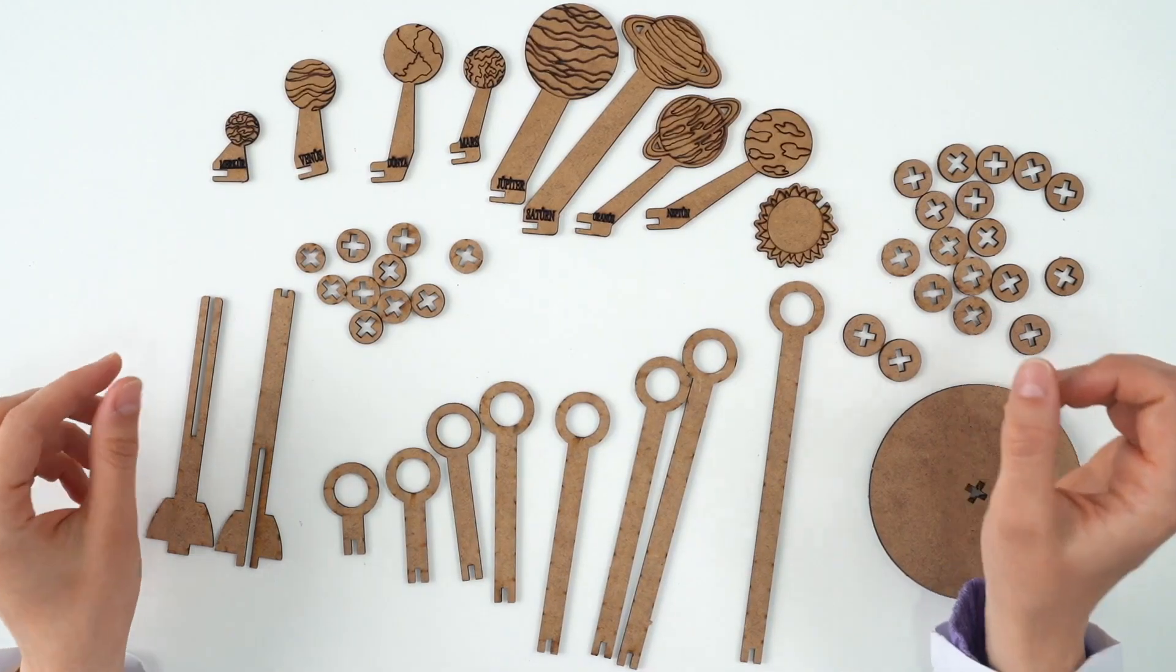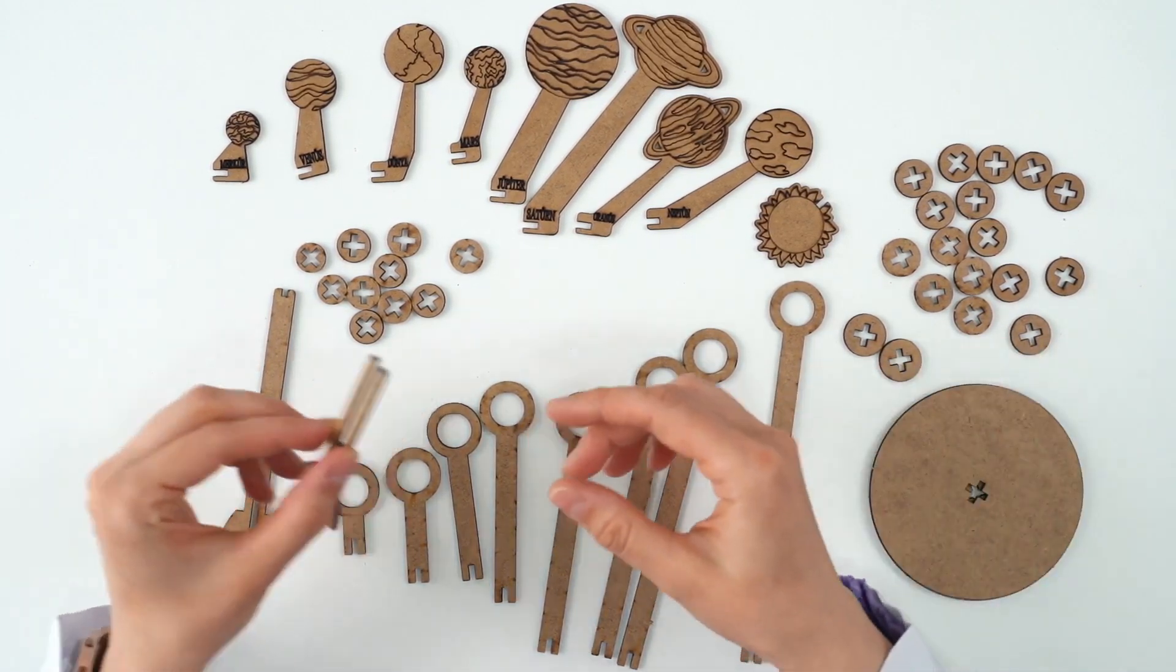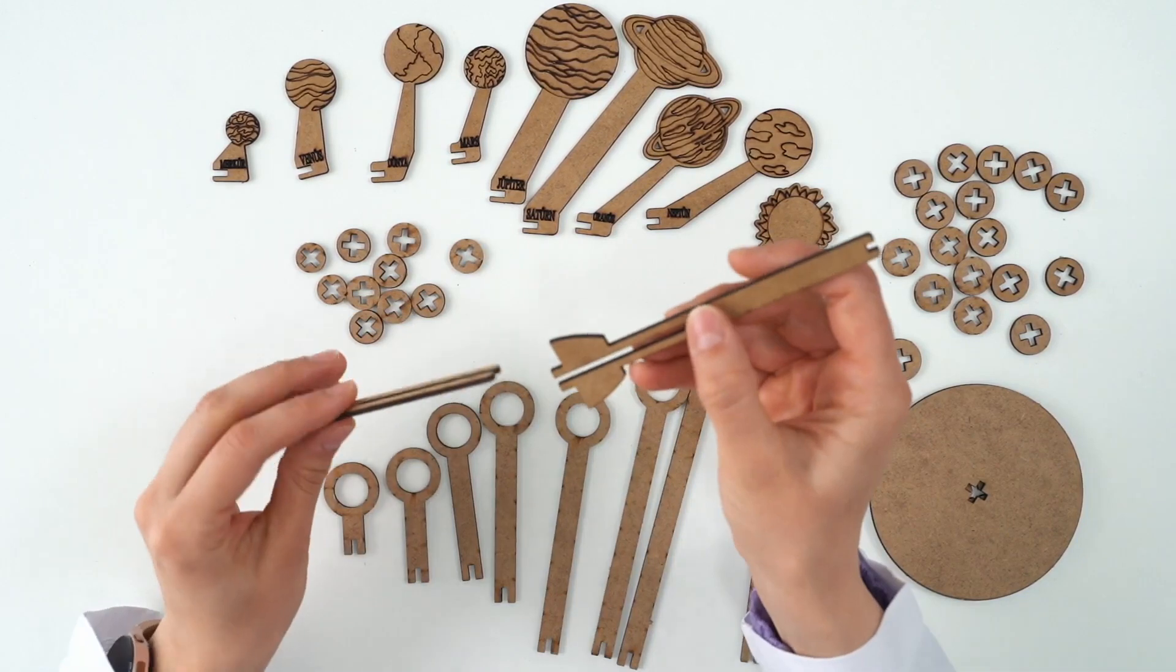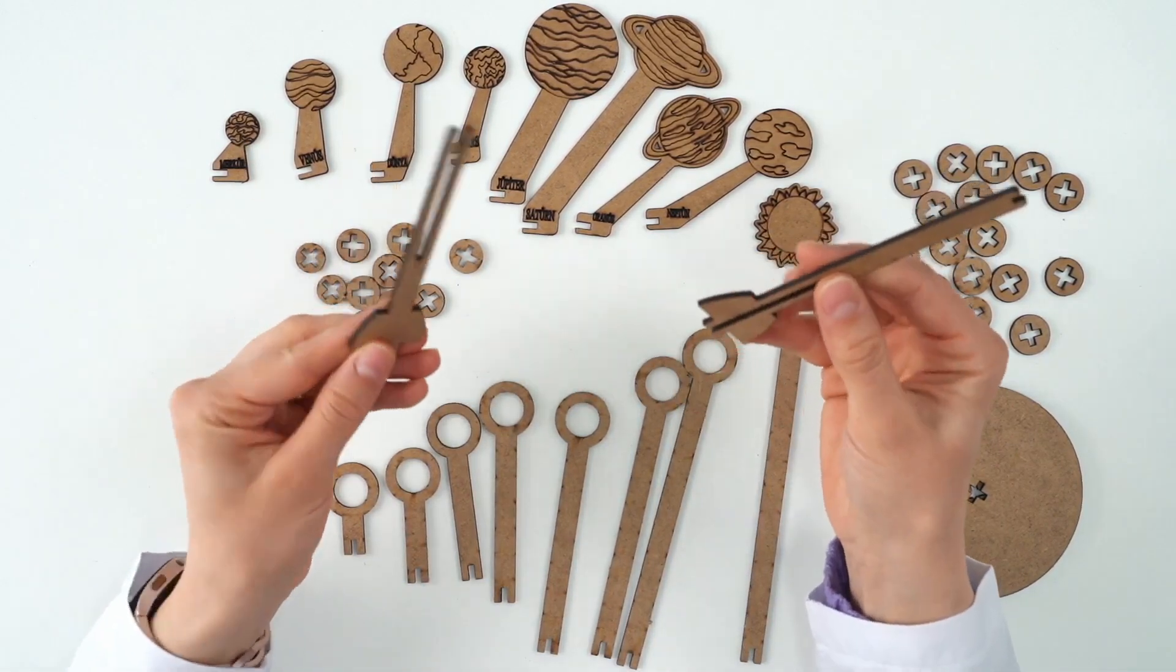After extracting the pieces from the wooden planet kit like this, let's start assembling the parts of the kit. We insert these two pieces into each other like this.